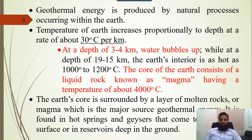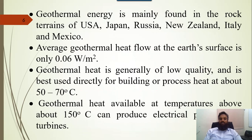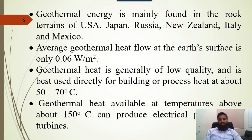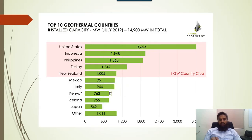Geothermal energy is found in hot springs that come to the earth's surface, or in reservoirs deep in the ground. It is mainly found in the rock terrain of the USA, Japan, Russia, New Zealand, Italy, and Mexico. The geothermal heat flow at the earth's surface is 0.06 watts per meter squared. Geothermal heat is generally of low quality and is best used directly for building or process heat at about 50 to 70 degrees. Geothermal heat available at temperatures above 150 degrees can produce electrical power from a turbine.